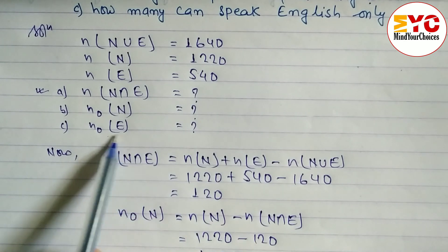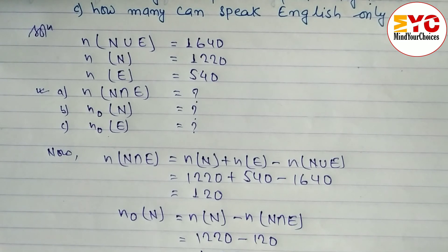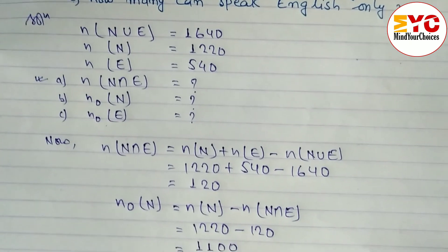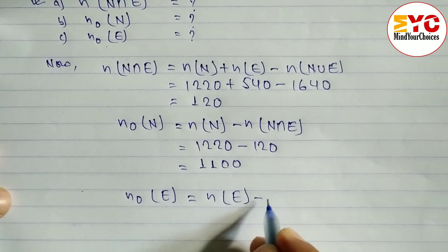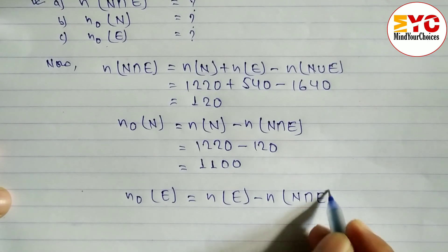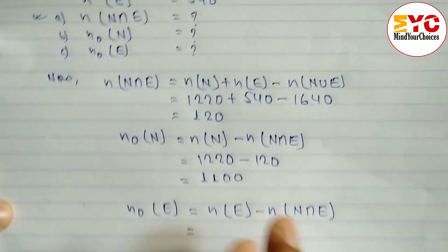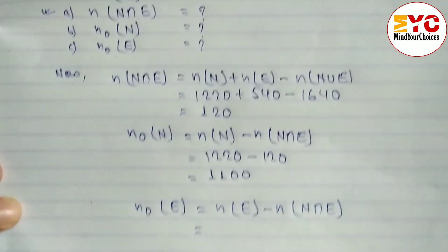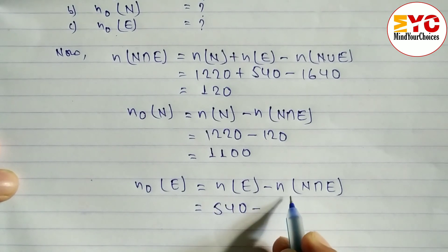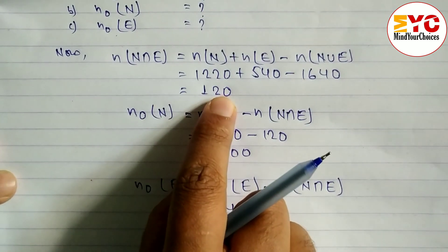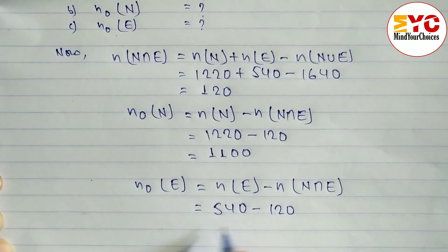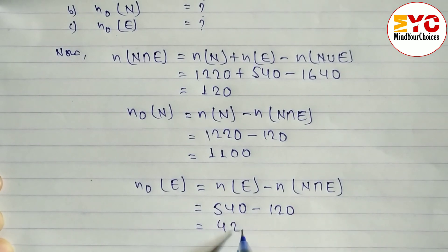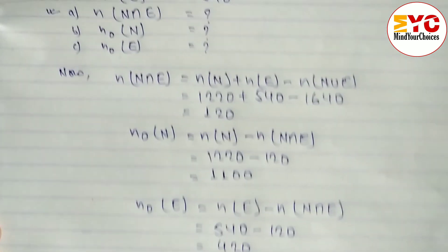Similarly, to find only English speakers, the formula is: N(only E) = N(E) − N(N∩E). So 540 − 120 = 420. The number of people who speak English only is 420. Hope you understand this set problem.